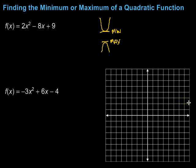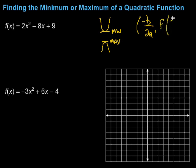The minimum or maximum is going to be the y-value at the vertex. To find the vertex of a quadratic function written in standard form, we take negative b over 2a — that's our x-coordinate. Then to find the y-coordinate, we put that in: it's f of negative b over 2a. We're going to use that to find our minimum or maximum of these quadratic functions.